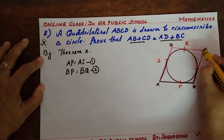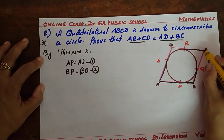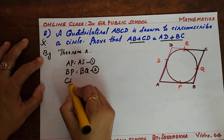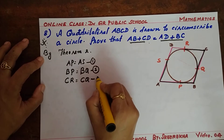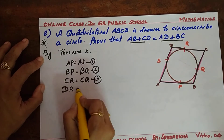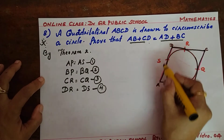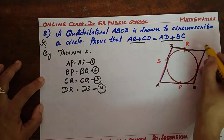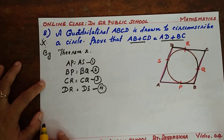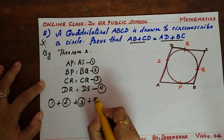From external point C: CR equals CQ — equation 3. From external point D: DR equals DS — equation 4. In all these four equations, I applied the theorem that tangents from an external point to the circle are equal. Now I am going to add up all four equations: equation 1 plus 2 plus 3 plus 4.